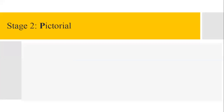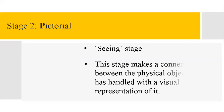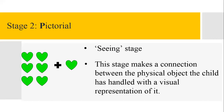After the concrete stage we move on to the second stage, which is the pictorial stage — the seeing stage. This stage makes a connection between the physical object the child has handled with the visual representation of it. We only move to this stage when a child has sufficiently understood the concrete experience and can relate to the concept via pictorial representations. In the case of our addition example, this stage would be drawing objects like hearts and counting them together to get the total.